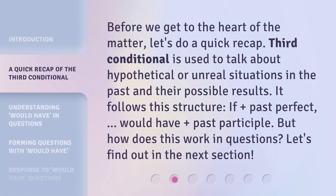Before we get to the heart of the matter, let's do a quick recap. The third conditional is used to talk about hypothetical or unreal situations in the past and their possible results. It follows this structure: 'if' plus past perfect, 'would have' plus past participle. But how does this work in questions? Let's find out in the next section.